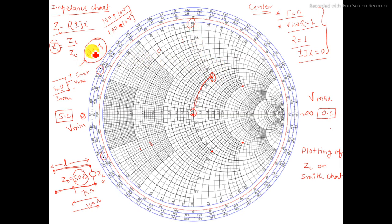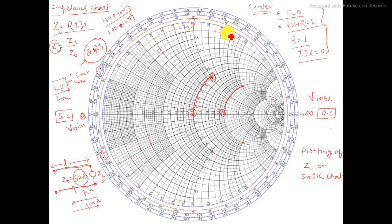Taking the example of 2 plus 2j: I find where 2 is on the center line — this circle belongs to the real value 2. Now I find the reactive value plus 2j — when it is plus, the value lies in the upper half of the Smith chart, not the lower. If it is minus, it lies in the lower part. I read the reactive value of 2 at the outer arc. The intersection of these two circles gives us 2 plus 2j — this is our normalized ZL.